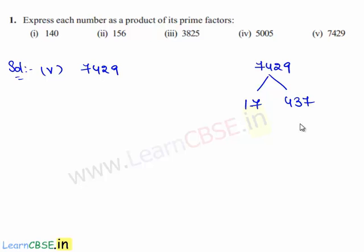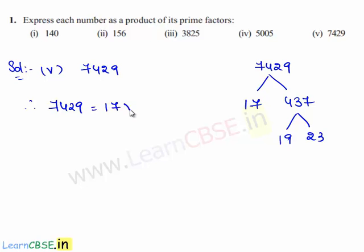And again, 437 can be written as 19 times 23. Therefore, 7,429 is equal to 17 times 19 times 23. Hence, the given number is expressed as a product of its prime factors.